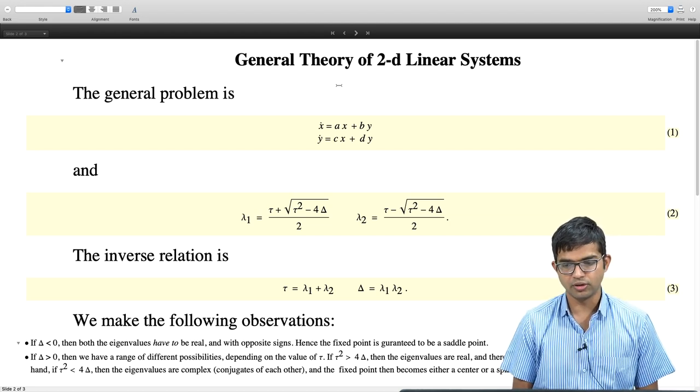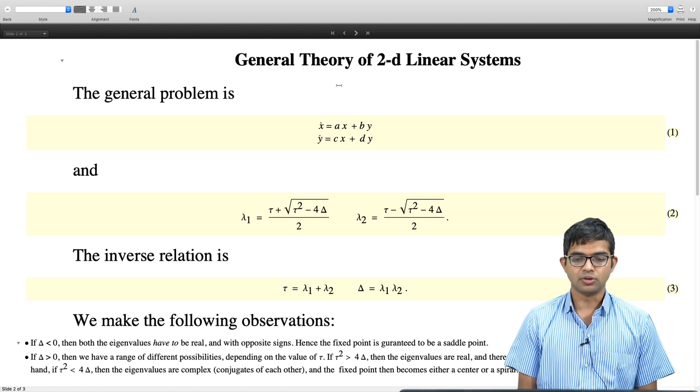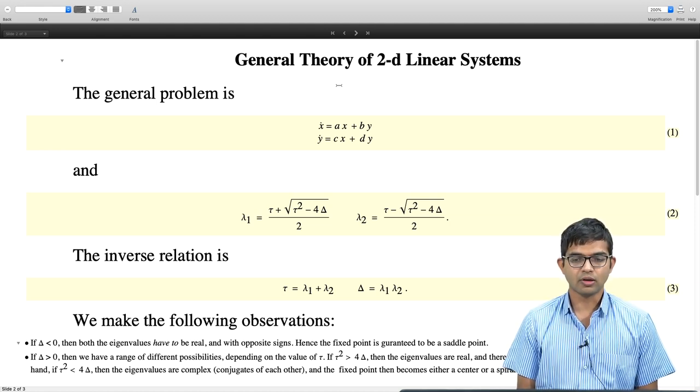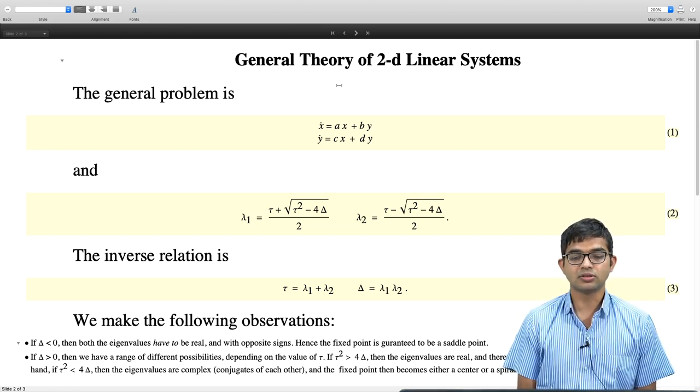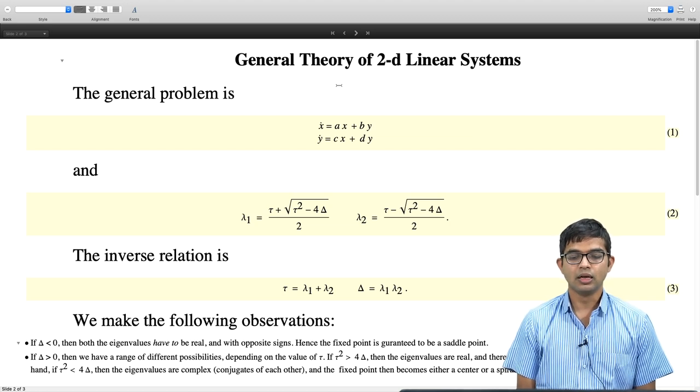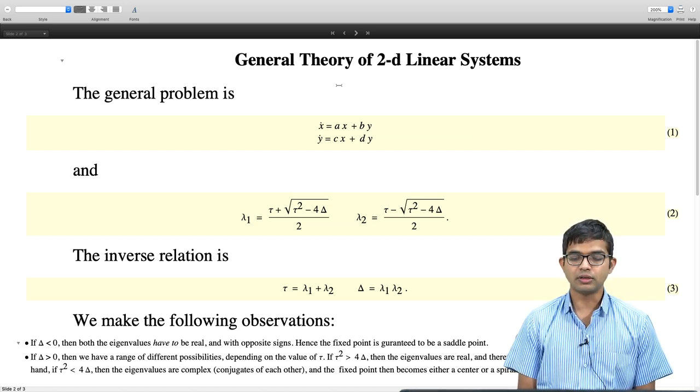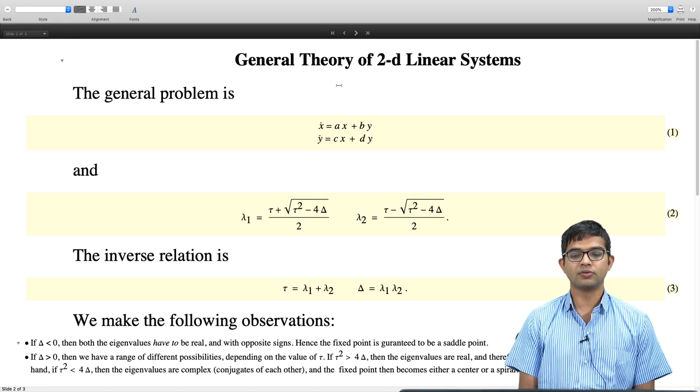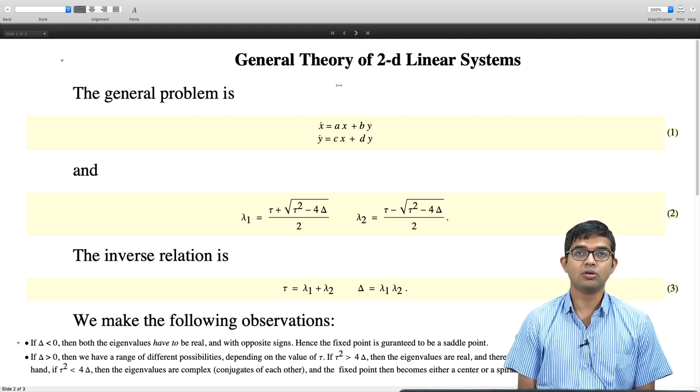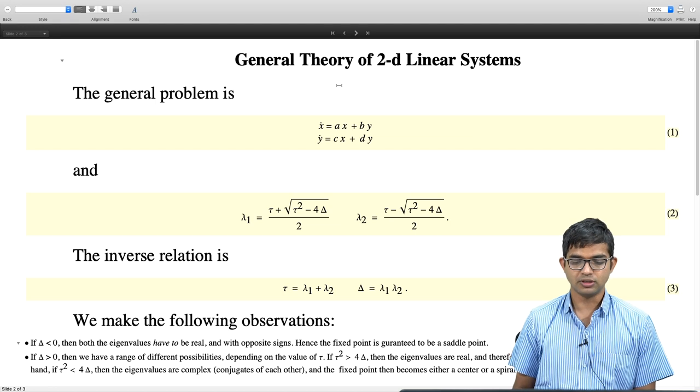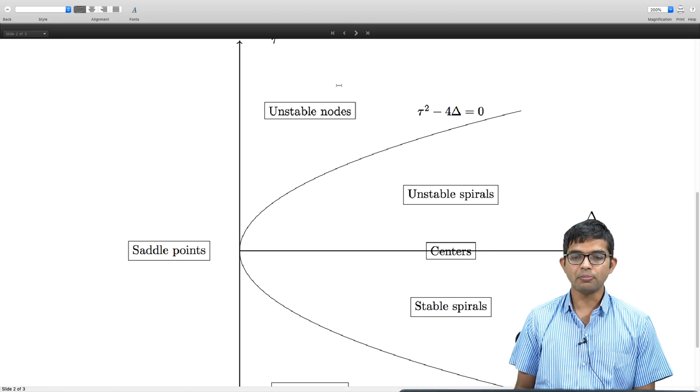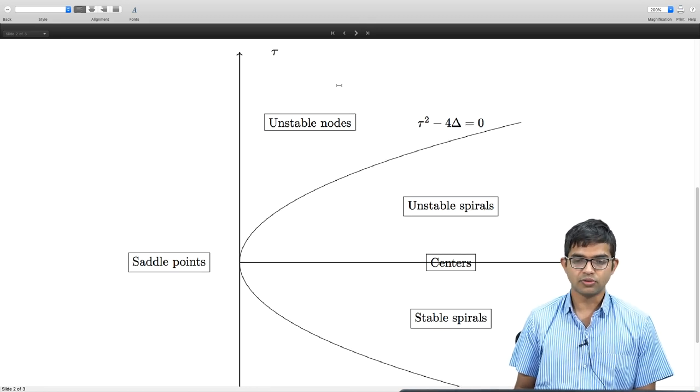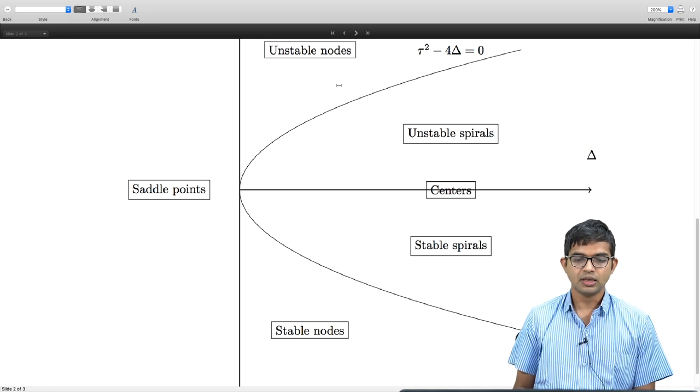We have a system which is like x dot equal to Ax plus By, y dot equal to Cx plus Dy. All the information, all the qualitative features are contained inside the matrix A, B, C, D. You diagonalize this matrix or obtain the eigenvalues lambda 1 and lambda 2, or equivalently look at the trace of this matrix and the determinant of this matrix. Just these 2 numbers basically tell you all about the nature of the fixed point at the origin.